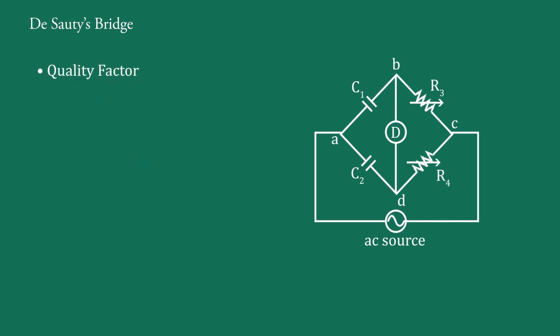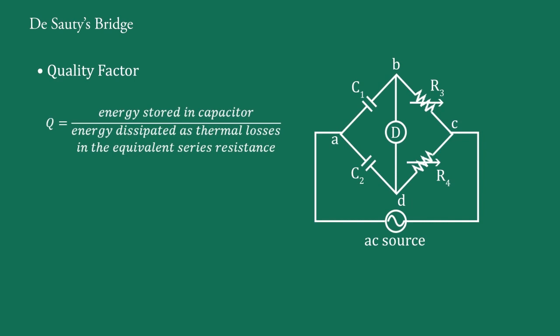Quality factor. The Q factor, that is quality factor Q, represents the efficiency of a given capacitor in terms of energy losses. It is ratio of energy stored in the capacitor to the energy dissipated as thermal losses in the equivalent series resistance. For perfect, that is pure or ideal capacitor, no energy is lost at all in the process of storing energy. Hence, Q factor is infinite.